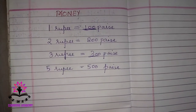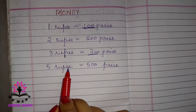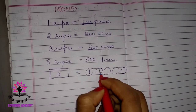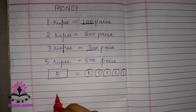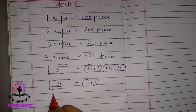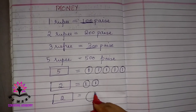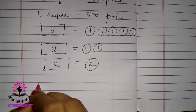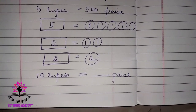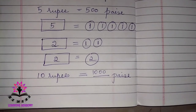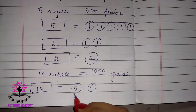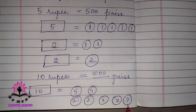5 rupees is equal to 5 one-rupee coins. If you have a 5 rupee note, that is also equal to 5 one-rupee coins. A 2 rupee note is equal to 2 one-rupee coins. 10 rupees is equal to 1000 paisa. One 10-rupee note will be equal to 2 five-rupee coins, or 5 two-rupee coins.